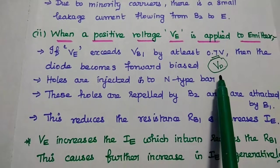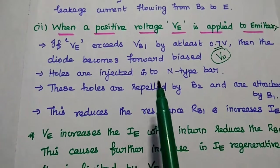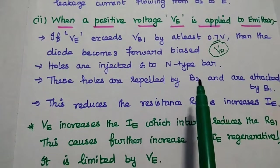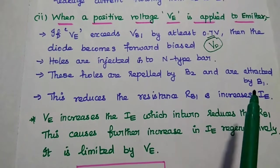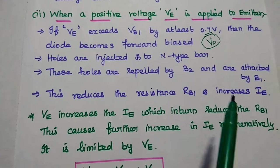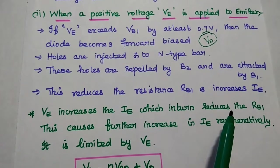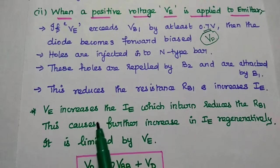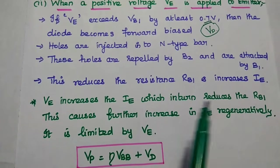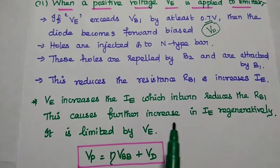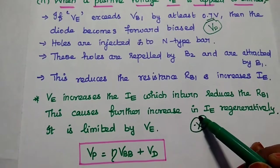When emitter voltage increases, the resistance RB1 decreases because maximum current is flowing from emitter to base 1. If RB1 decreases, the current increases regeneratively — a large amount of current flows from emitter to base 1. So when VE increases, IE is increased regeneratively. The peak voltage of UJT is given as: VP = eta × VBB + VD, where VD is the cut-in voltage of the diode. This regenerative behavior is the unique characteristic of UJT.